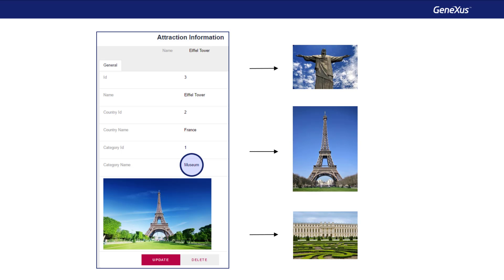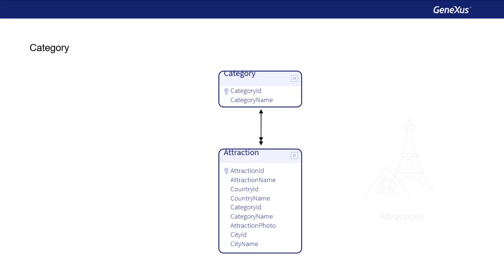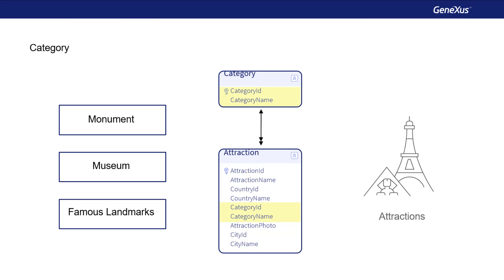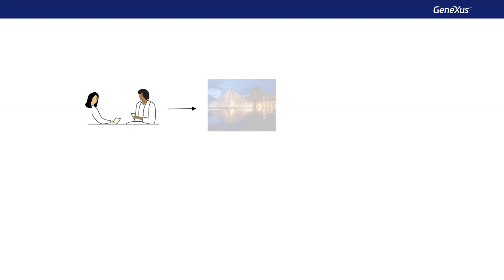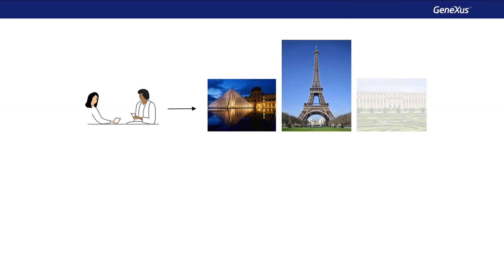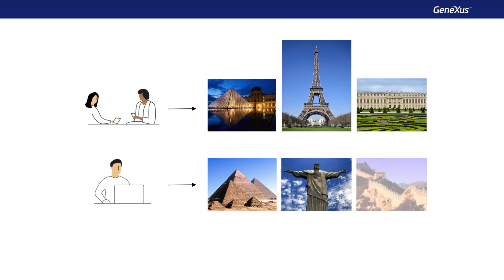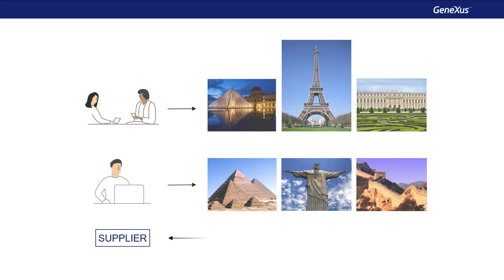When we design transactions, we can represent these relationships by including the attributes of one transaction in another. The agency's staff tells us that they work with suppliers, who from time to time offer them visits to tourist attractions in different parts of the world. Each supplier offers many tourist attractions, but each attraction is managed by a single supplier.